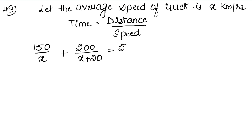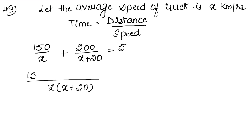Now let's solve this. Taking the LCM, which will be x into x plus 20. So we get: 150 into (x plus 20) plus 200 into x, all over x(x+20), equals 5.